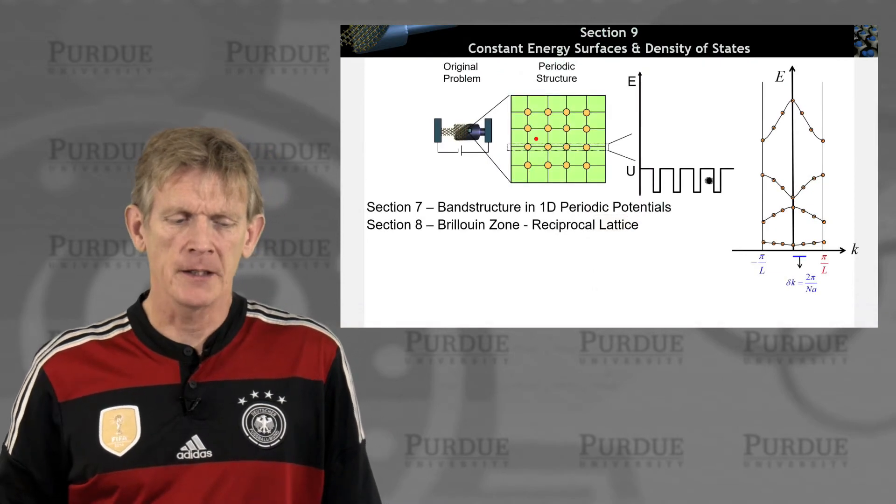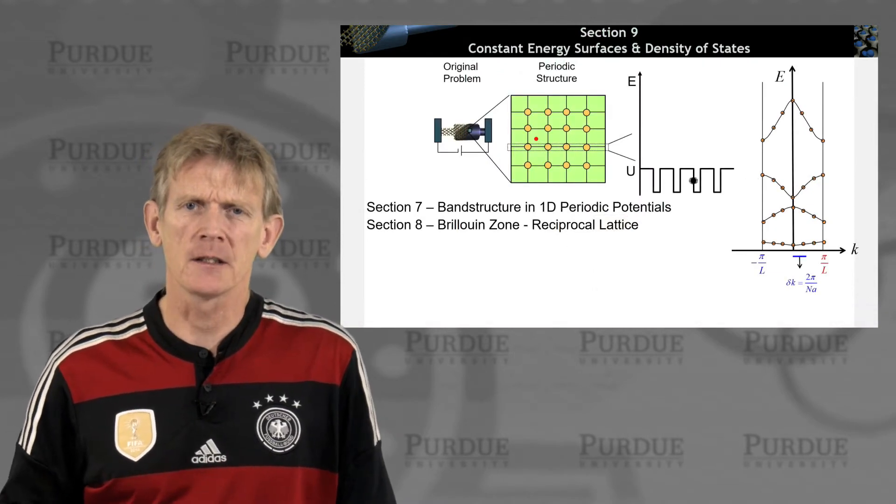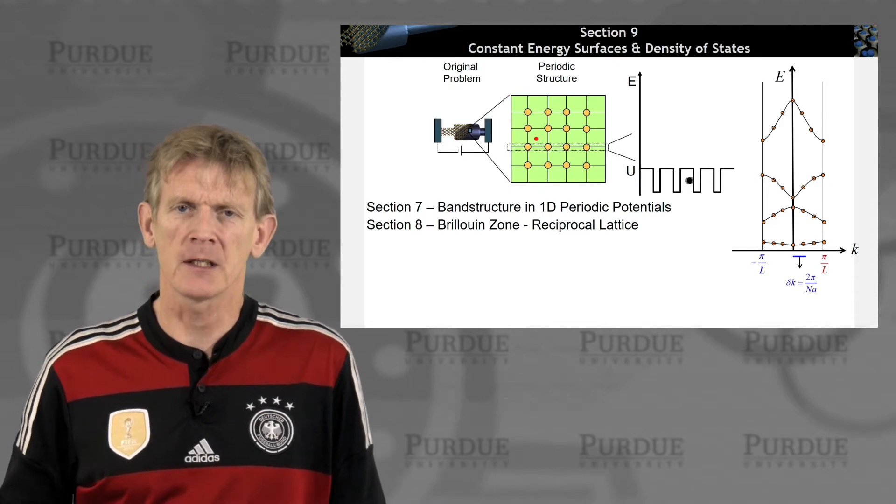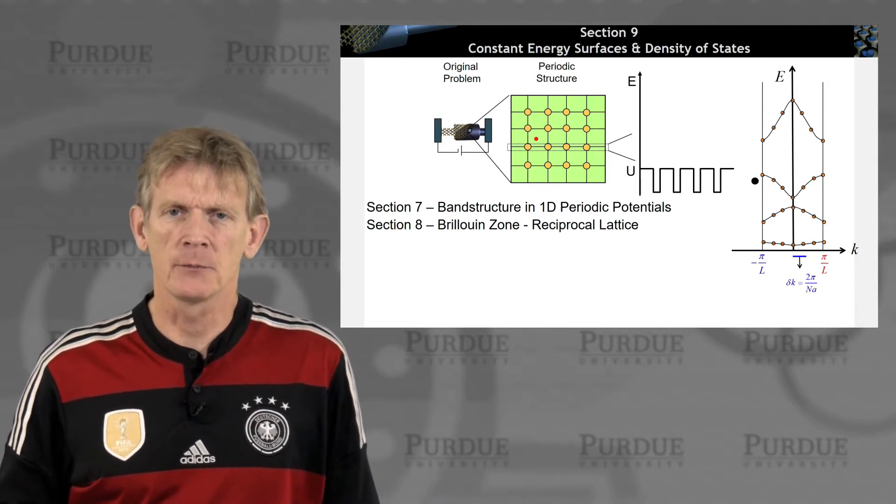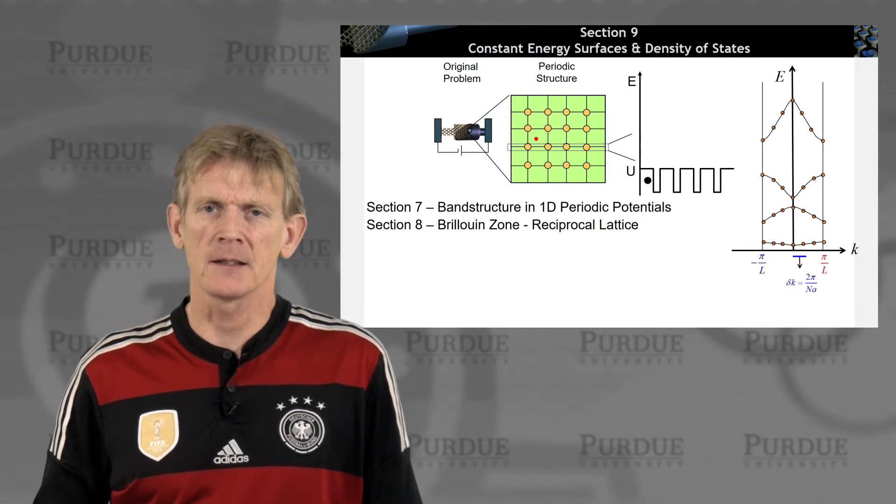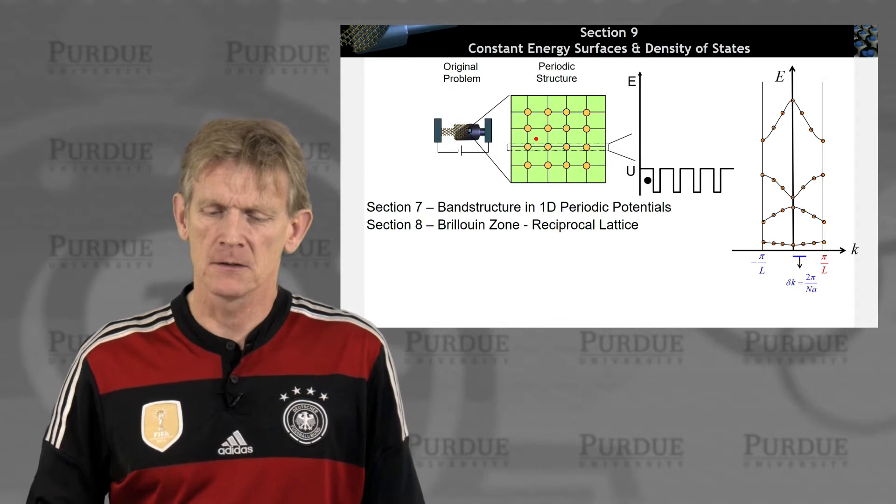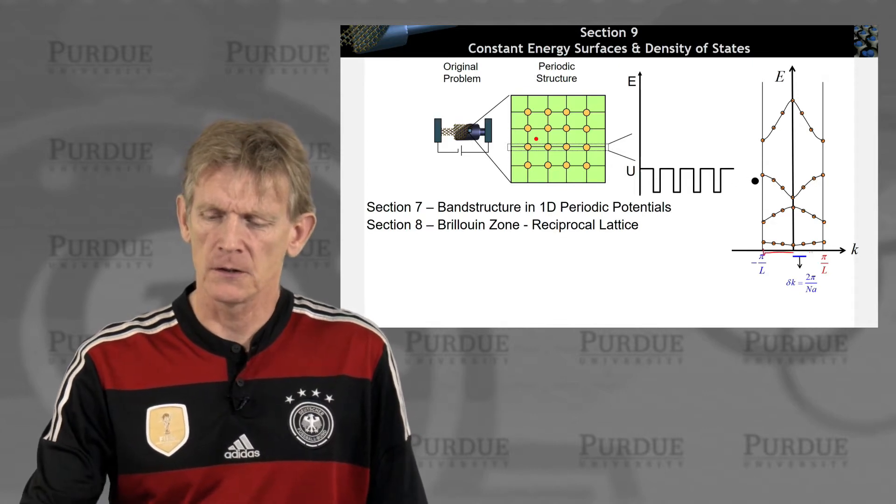Quick reminder: Section 7, we calculated periodic potentials in one dimension and came up with a Kronig-Penney model. In Section 8, we talked about a Brillouin zone, a reciprocal lattice, that fully represents all the state information in the central region we call the Brillouin zone.